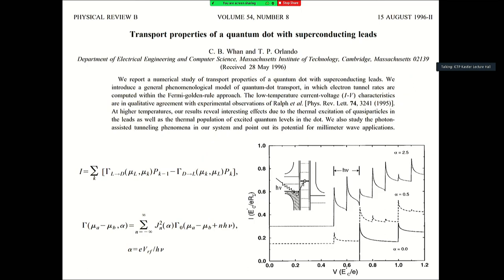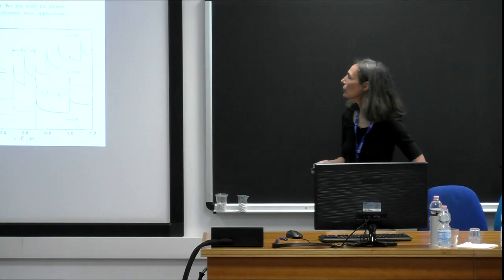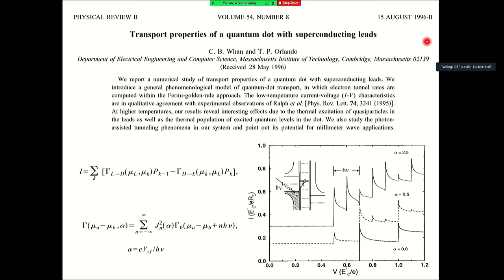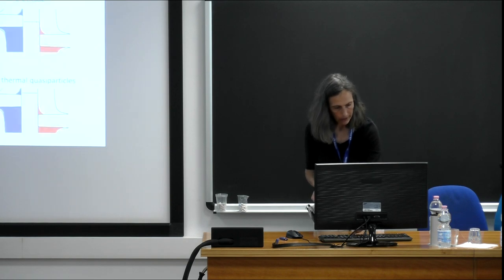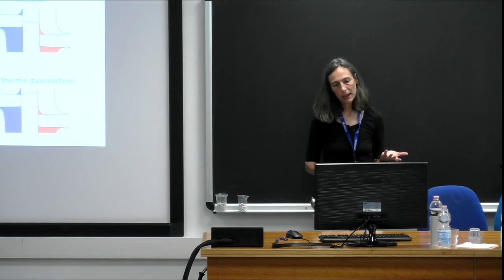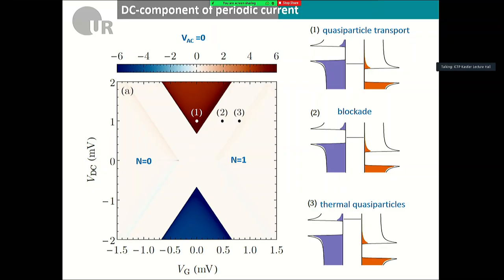What happens when we have not an SIS junction but a quantum dot inside the superconductor? There is work from 1996 by the MIT group of Van and Orlando, who explained experiments with a quantum dot subjected to microwaves using a Tien-Gordon approach, with the microwaves shifting the tunneling rates in and out of the junction. In our case it works exactly the same way.